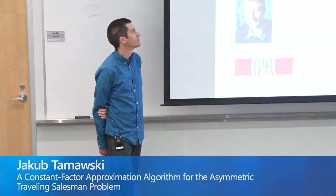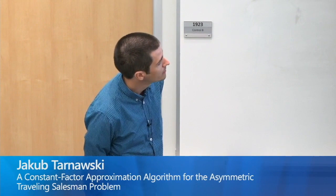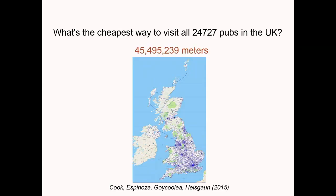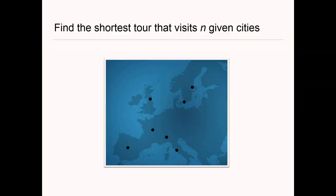Thanks Nikhil for the introduction. This is joint work with Ola, who is here, and with Laszlo Vek, who is at the London School of Economics. This work is inspired by the mother of all research questions: what is the cheapest way to visit all 24,727 pubs in the UK? The answer, due to Cook et al., is 45,000 kilometers — and this is exactly the optimum.